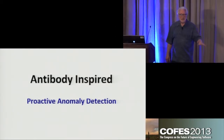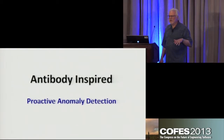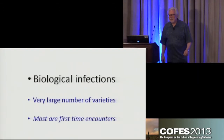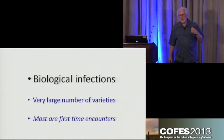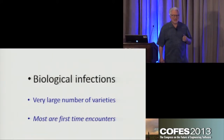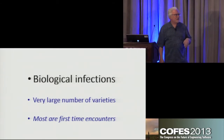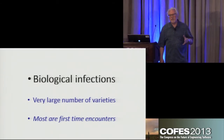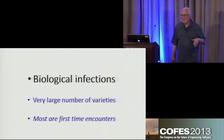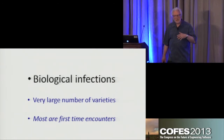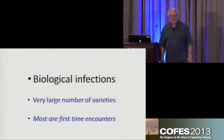What that means is we are going to look for things we've never seen before — a very interesting trick. The body does this in the immune system. Biological infections come in an extremely large number of varieties, and most of them come without ever having been detected before — at least the ones that cause us problems.